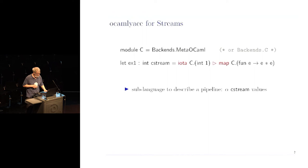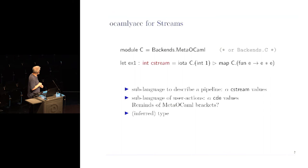The sublanguage of user actions is in red. The way we usually write, we make an alias C in a C namespace. C stands for code, which here is bound to the meta-OCaml backend. It operates on the values of the type alpha C. I should remind you of meta-OCaml brackets, although that's not necessarily meta-OCaml brackets. It depends on the backend. Overall, you can see it's an infinite stream of squares of natural numbers starting with one.